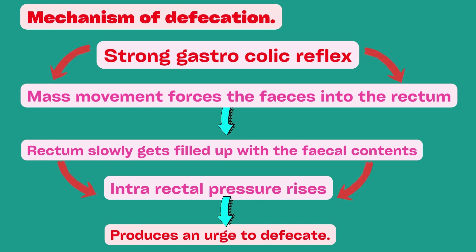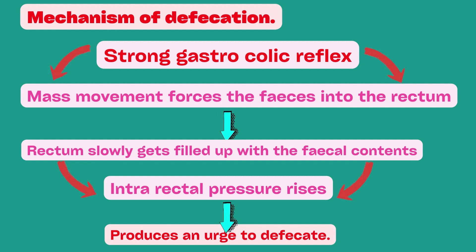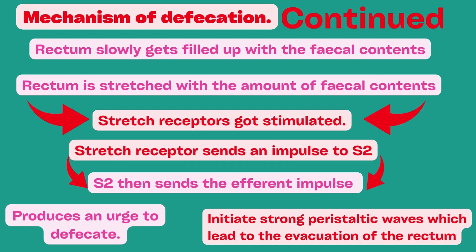Now we will understand the mechanism of defecation. Usually at least once a day, as a result of a strong gastrocolic reflex, mass movement forces the feces into the rectum. As the rectum slowly fills with fecal contents, the intrarectal pressure rises, producing an urge to defecate. The rectum also has stretch receptors; when stretched by fecal contents, these receptors send an impulse to the sacral center S2. S2 then sends efferent impulses through the parasympathetic nerves, initiating strong peristaltic waves which lead to evacuation of the rectum. At the same time, the smooth muscles of the internal anal sphincter relax. This is the reflex defecation activity and is sufficient to expel the feces.